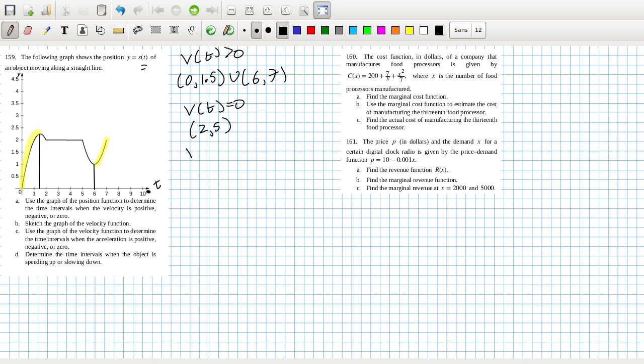When is the velocity zero? Interval two to five. And then when is the velocity negative? That would be there and there.